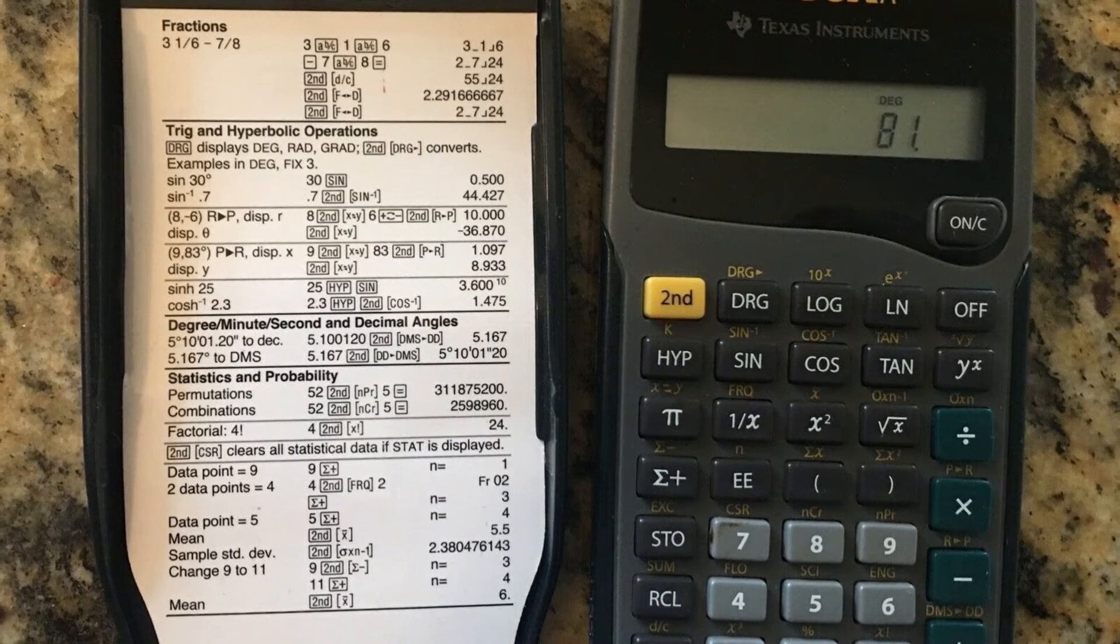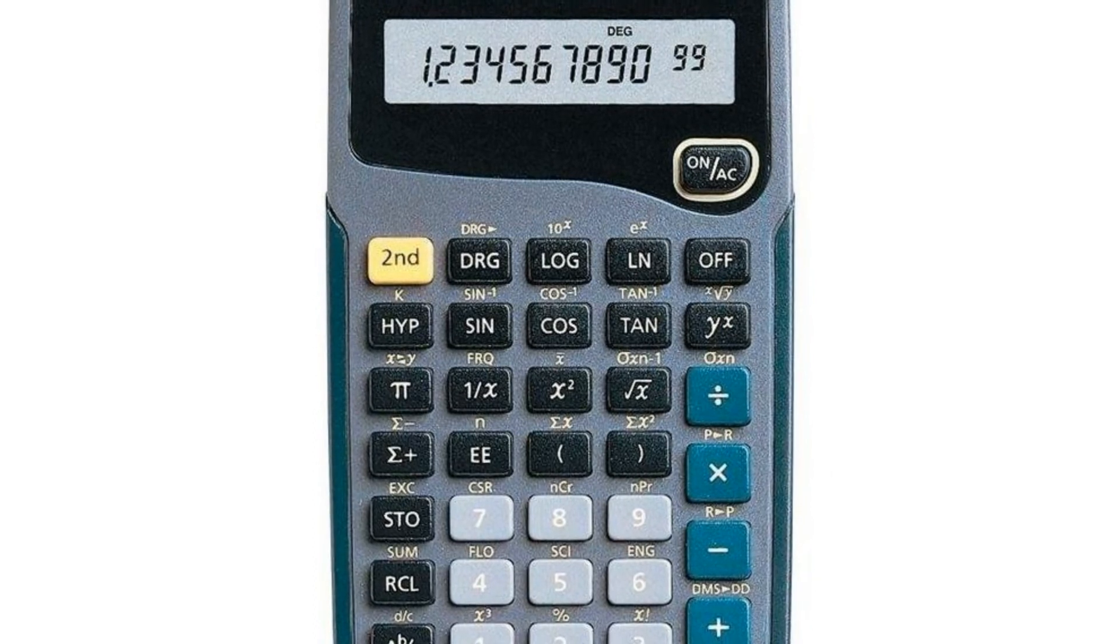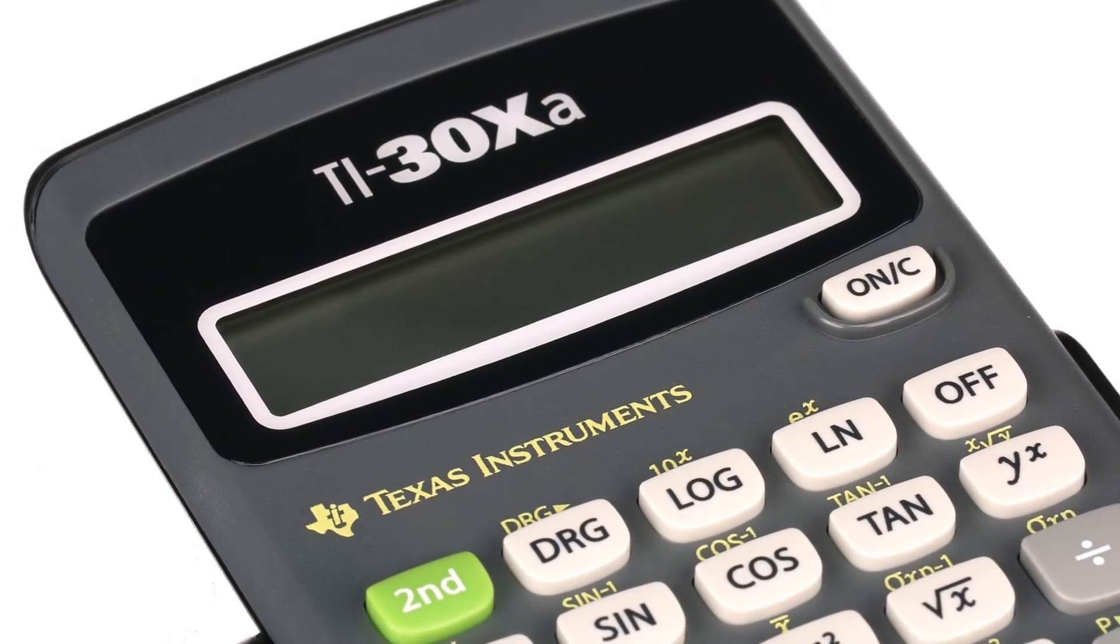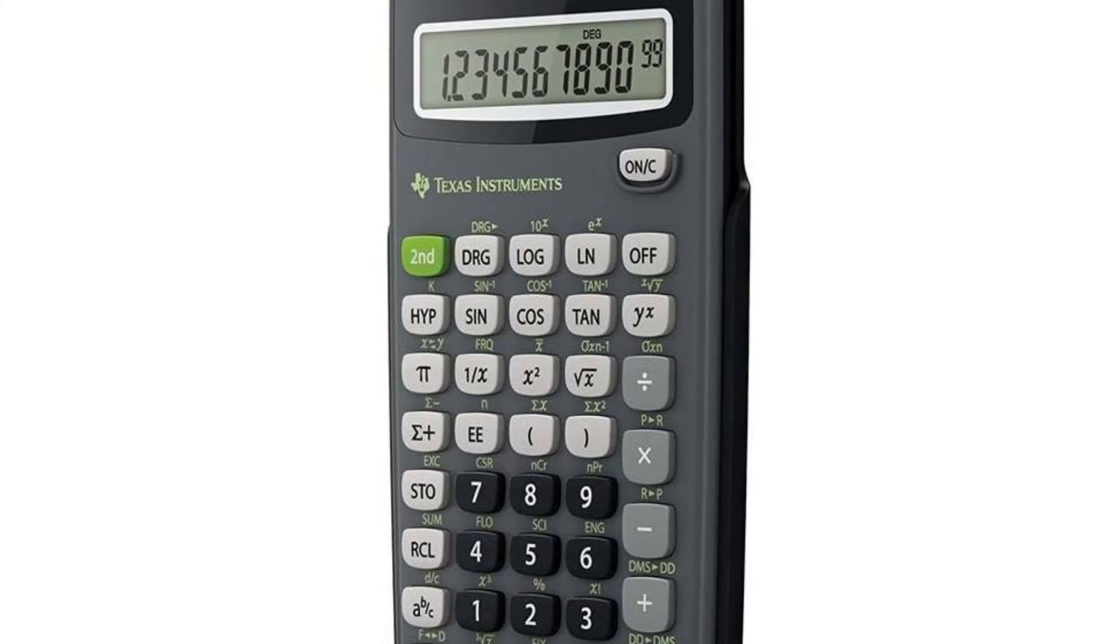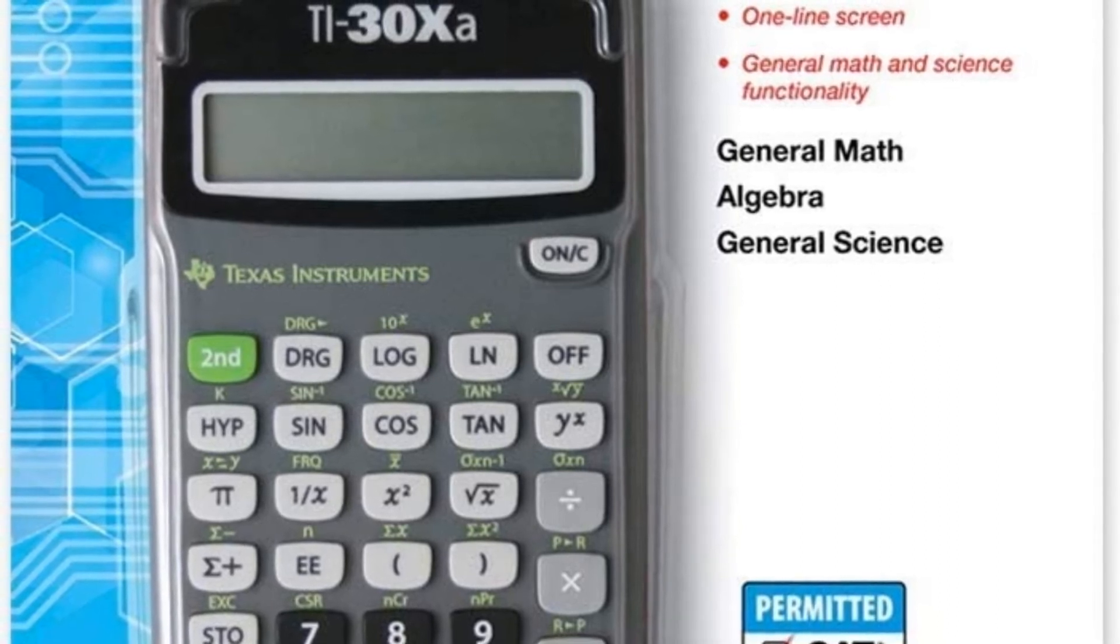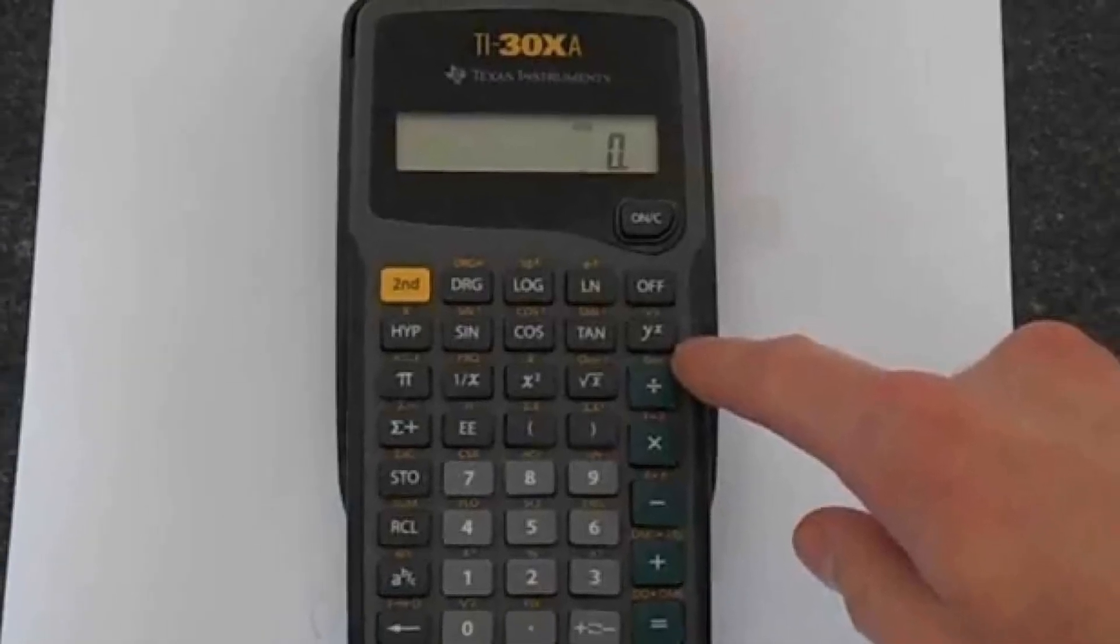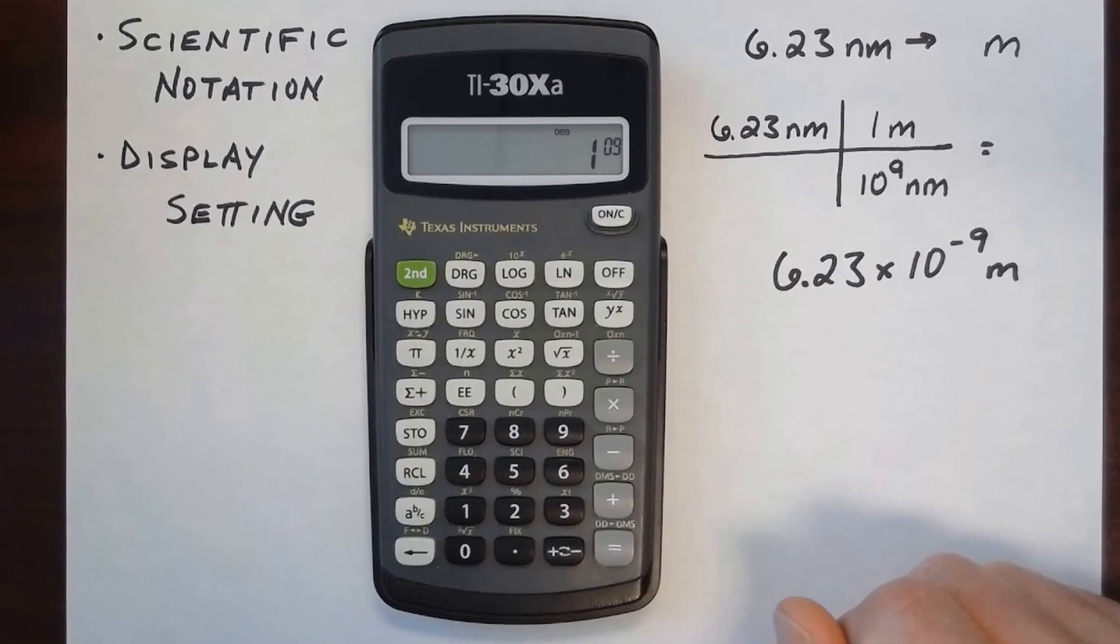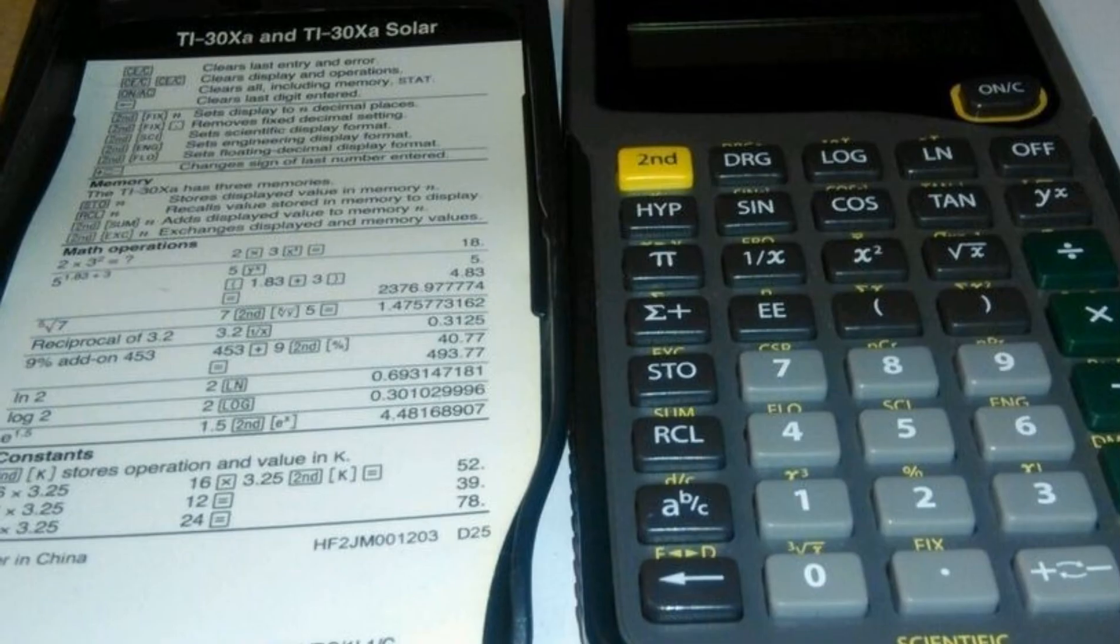Once you get to a certain level of math classes, a regular old calculator just isn't good enough anymore. You need a high-functioning calculator that can perform algebraic, trigonometric, and statistical problems in addition to general mathematical tasks. The Texas Instruments TI-30XA Scientific Calculator can do this for you. It is extremely handy when it comes to figuring tricky fractions. It can add, subtract, multiply, and divide fractions when entered in a traditional numerator/denominator format. This calculator can also do a variety of conversions, from fractions to decimals, degrees to radians to grads, DMS to decimal degrees, and polar to rectangular.